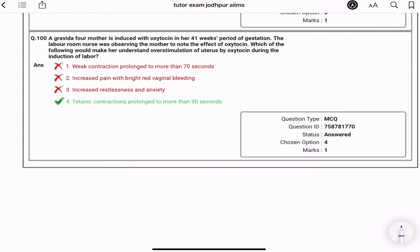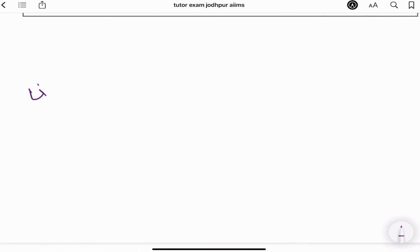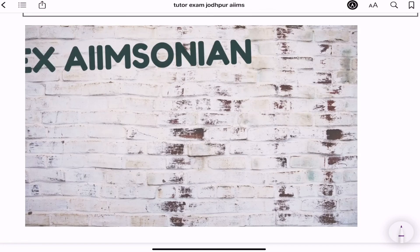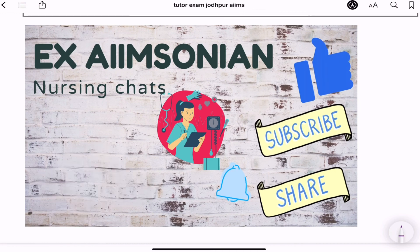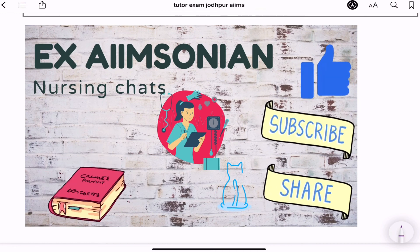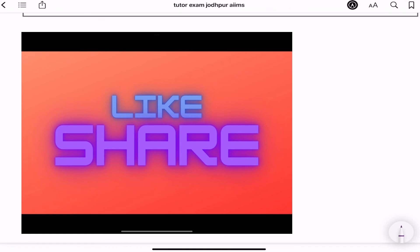A gravida four mother is induced with oxytocin at her 40 week period of gestation. Labor room nurse was observing mother to note the effect of oxytocin. Which of the following would make her understand overstimulation of uterus by oxytocin during the induction of labor? Tetanic contraction prolonged more than 90 seconds. Golden point. I hope you like this question paper. Please like this video, subscribe to my channel, and share as much as you can. I'll be really grateful to you. And please let me know in the comments. Thank you.